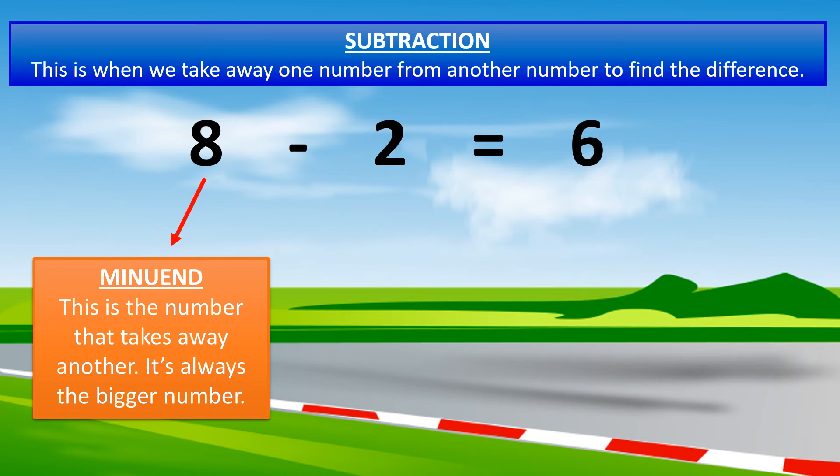Great. The minuend is the number that takes away another. It's always the bigger number.